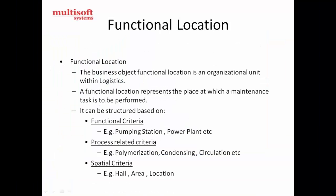Functional locations — it's an organizational unit and a logistic. Functional locations represent the place at which a maintenance task is to be performed, and it is divided into three structures: functional criteria, process-related criteria, and spatial criteria. Functional criteria includes pump stations, power plants, or any other functional areas.